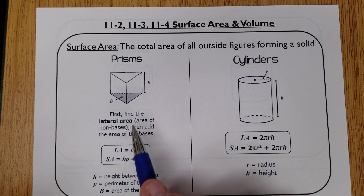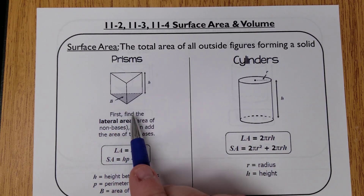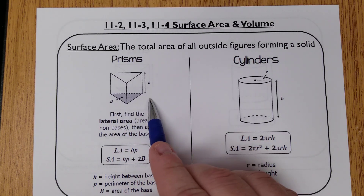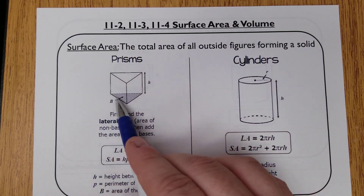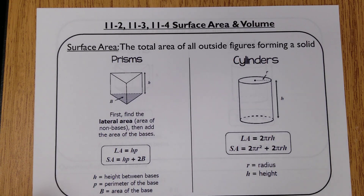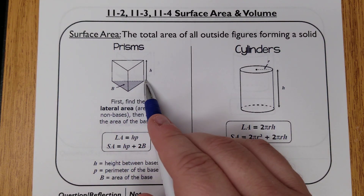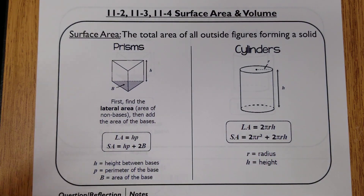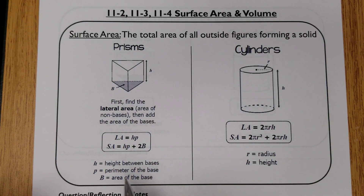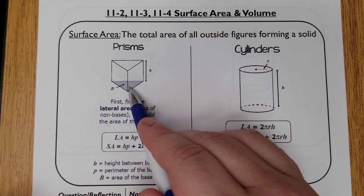First up is a prism. By definition, a prism has two shapes that are the same — those count as the bases. The capital B is the area of that base shape, and the height of the prism is the distance between those two bases. A prism is built from those two bases plus a series of rectangles wrapped around them. The lateral area — just the rectangles — is the perimeter of the base times the height of the prism. For total surface area, we add the two bases to all those rectangles.